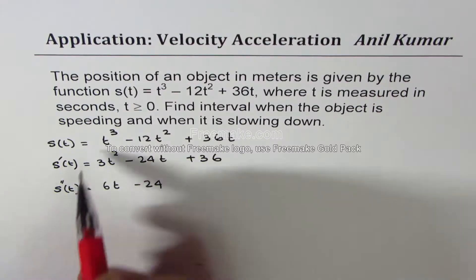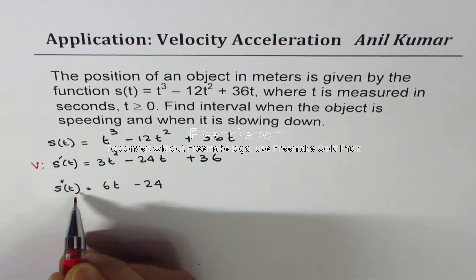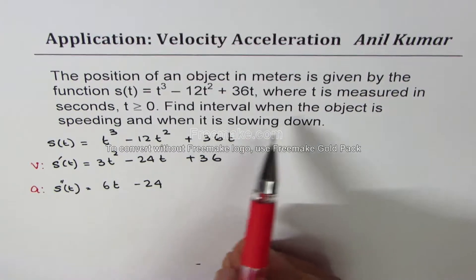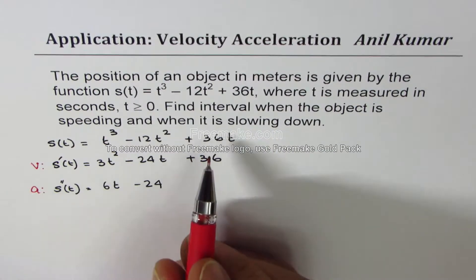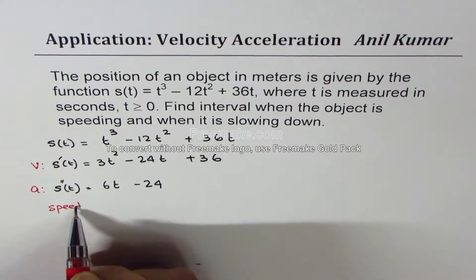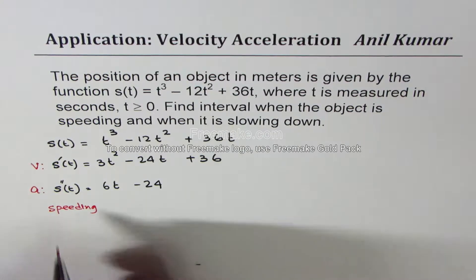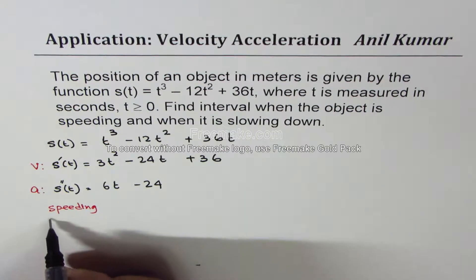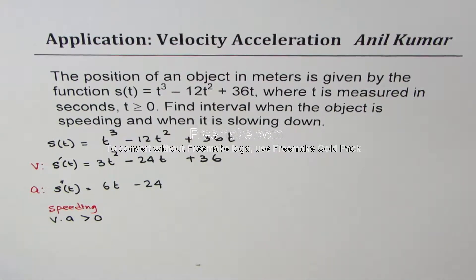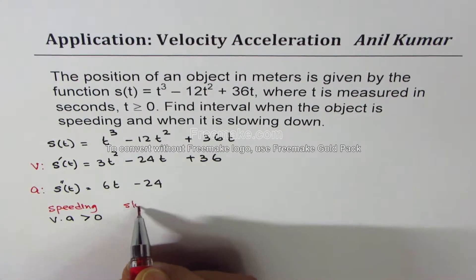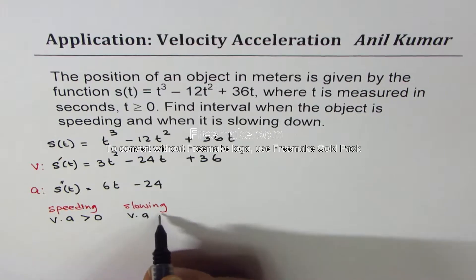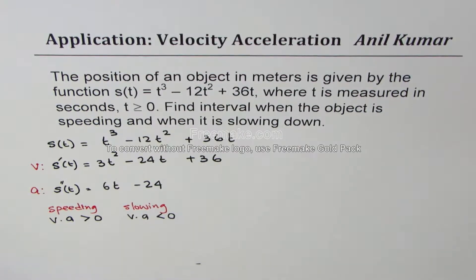When we say first derivative, we are talking about velocity and the second derivative is acceleration, the rate of change of velocity. To find speeding or slowing down, what we understand is that speeding means that velocity times acceleration is greater than 0. And slowing down means that velocity times acceleration is less than 0. That means they have opposite signs.